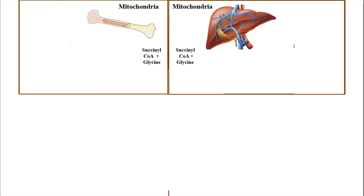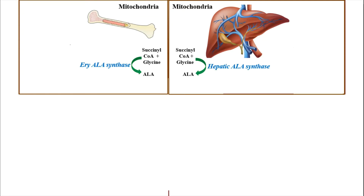In the slide, two diagrams are given — one of liver, meaning the hepatic variety, and one of bone marrow, meaning the erythropoietic variety. All the enzymes related to heme synthesis are present in both these organs, and we will discuss both simultaneously. In both erythropoietic tissue (bone marrow) and hepatocytes, in the presence of ALA synthase enzyme, succinyl-CoA and glycine combine to form ALA. In the liver, the enzyme is called hepatic ALA synthase or ALA synthase 1, whereas in bone marrow it is erythropoietic ALA synthase or ALA synthase 2.